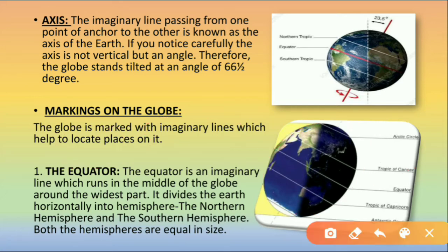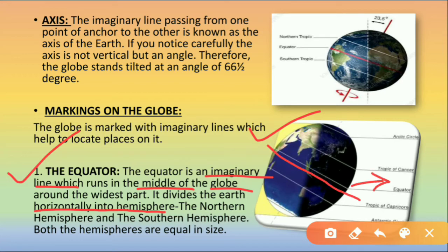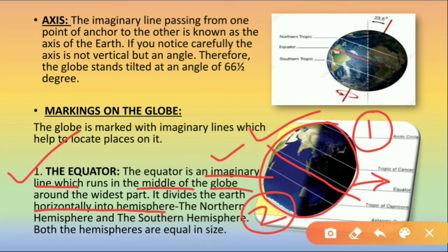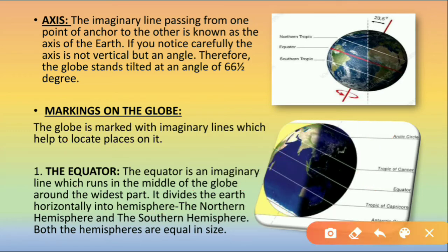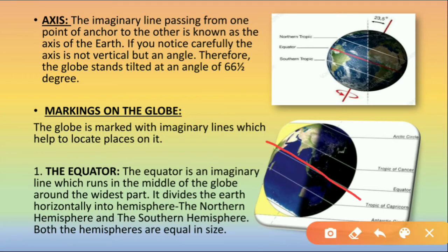The first marking on the globe is the equator. The equator is an imaginary line which runs in the middle of the globe around its widest part. It divides the earth horizontally into hemispheres. This line of equator is exactly at the center and it divides the earth into two equal parts. The equator is horizontal — not vertical. It divides the earth into two equal parts, which are known as hemispheres.